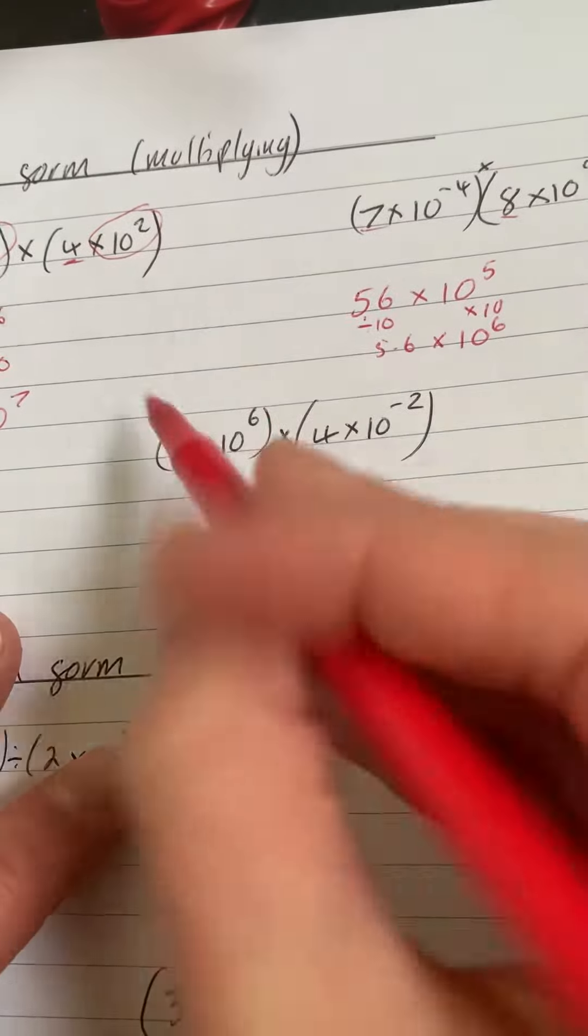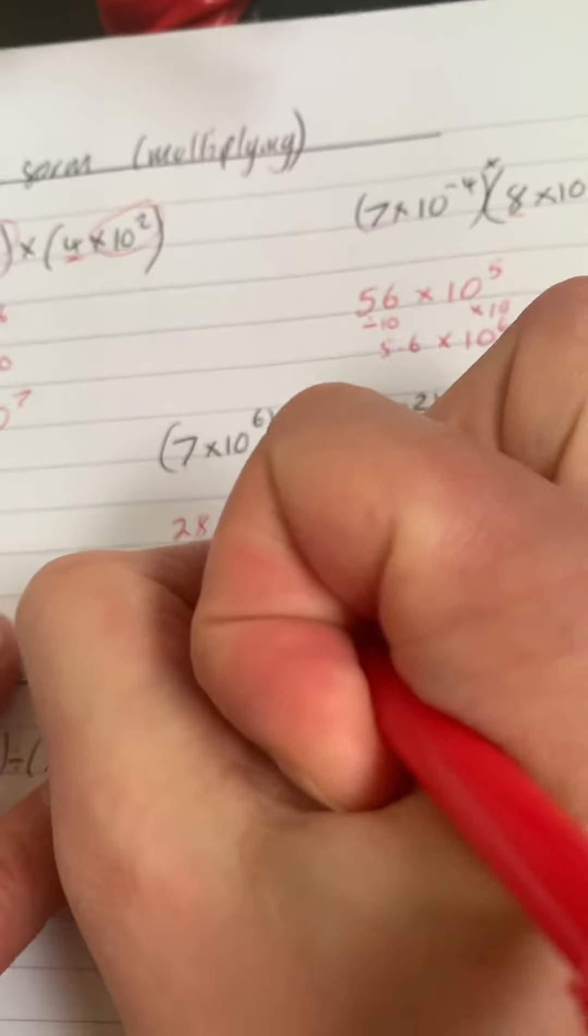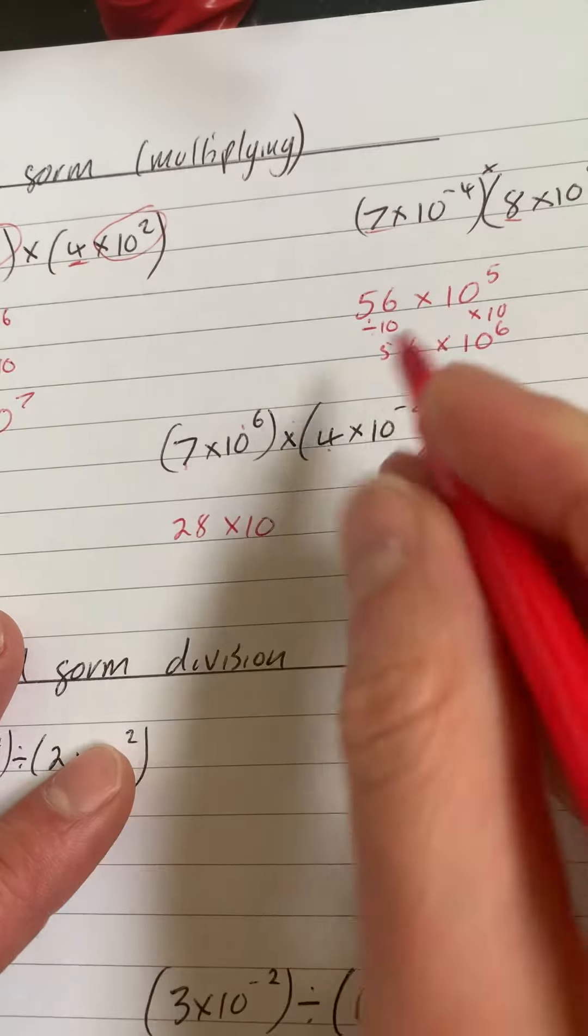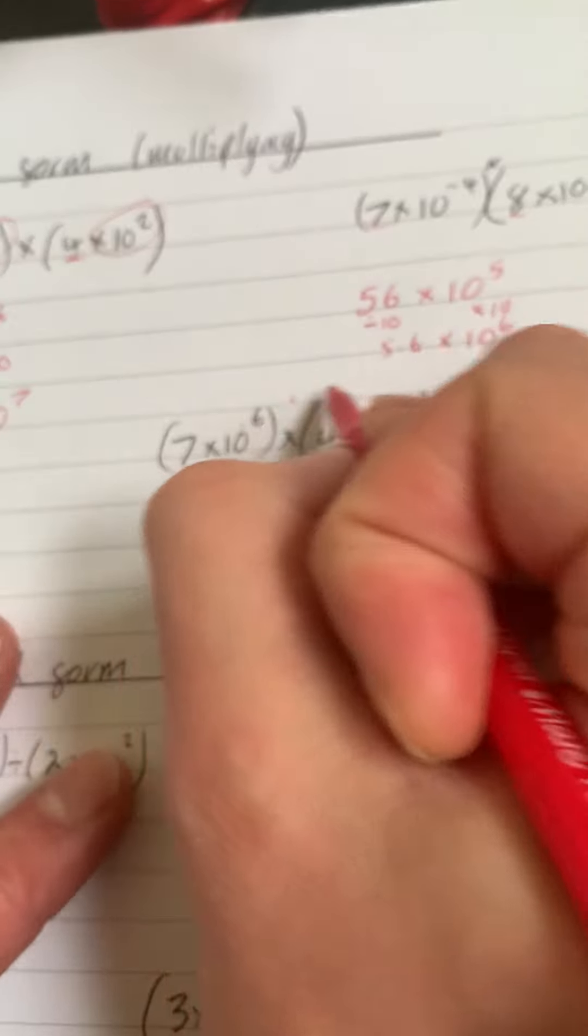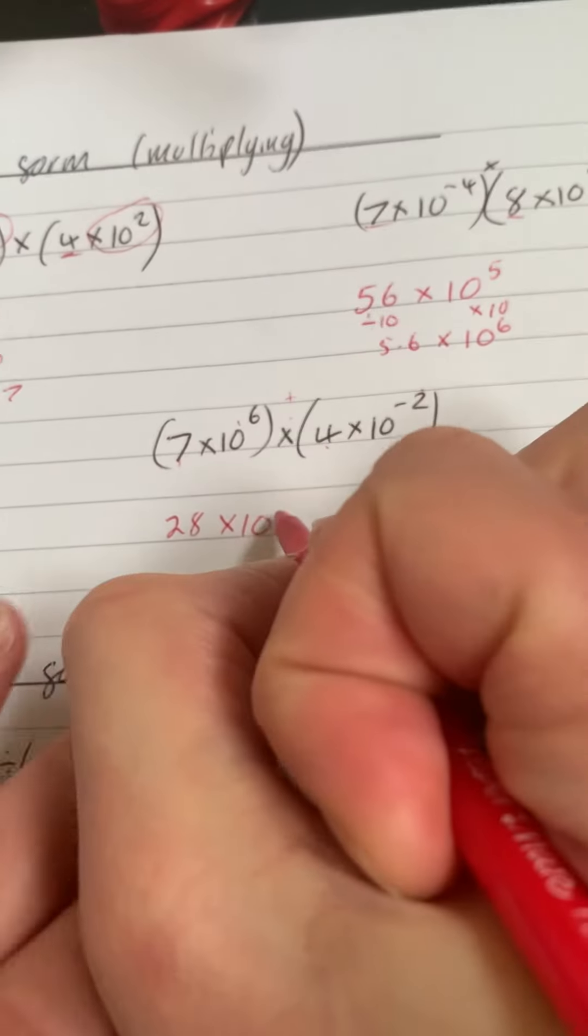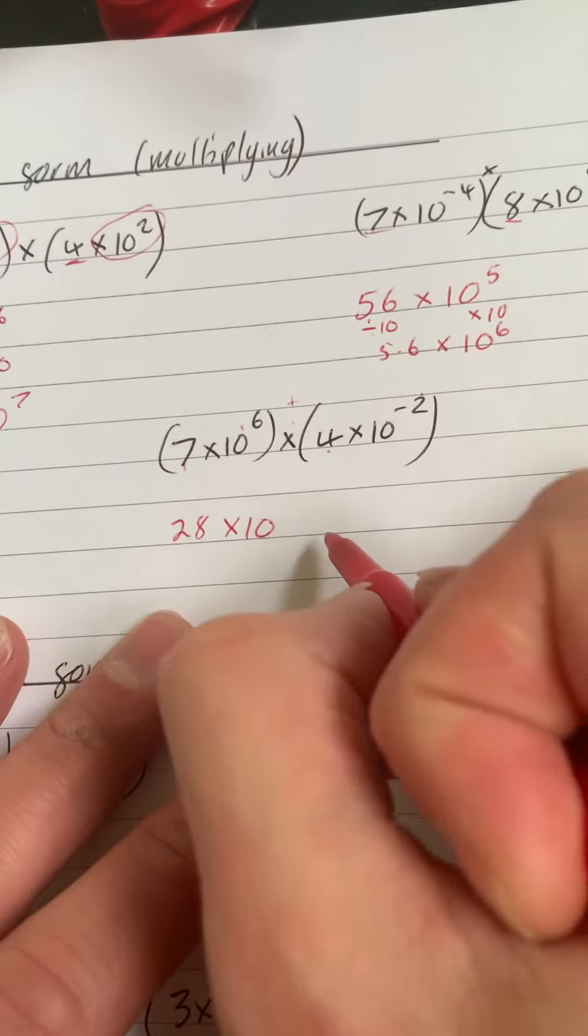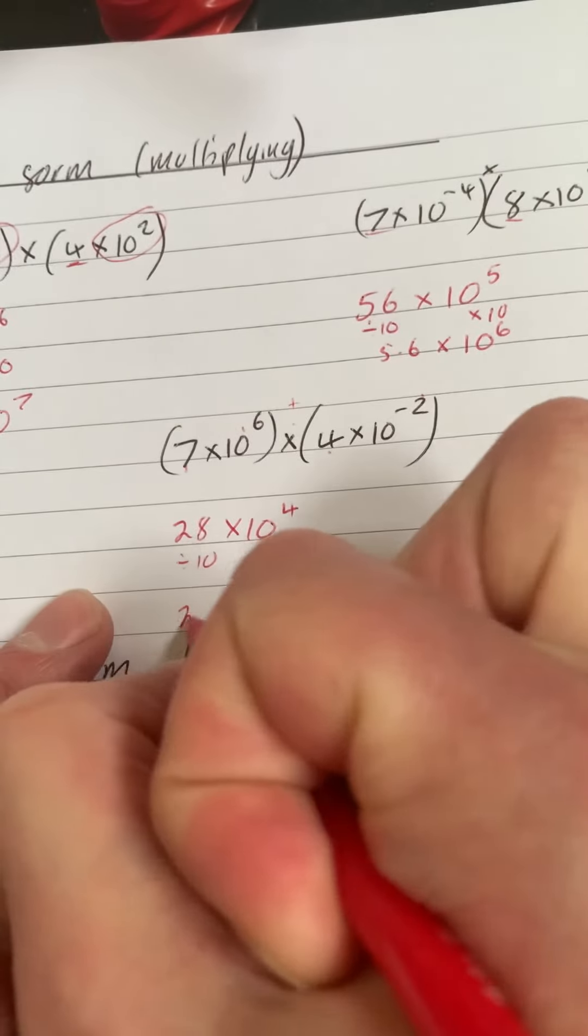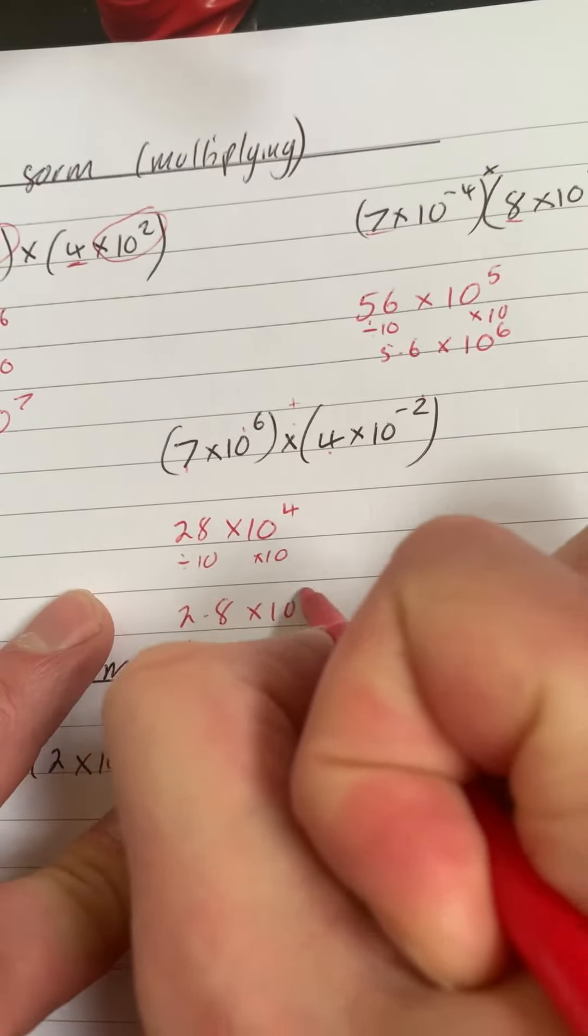Last one. We've got 7 times 4, which is 28, times 10, and we've got 6 plus minus 2, which is the same as taken away, because 6 plus and a minus 2 gives you 28 times 10 to the power of 4. We divide that by 10, so we times that by 10, so we've got 2.8 times 10 to the 5.